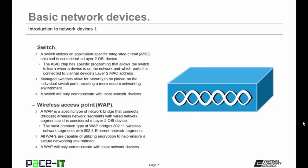All wireless access points are capable of utilizing encryption to help ensure a secure networking environment, and you should ensure that all of your WAPs have encryption enabled. A WAP will also only communicate with local network devices, unless of course it's a wireless router. But that's a discussion for a different day.